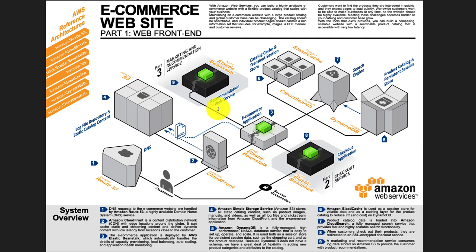This is an architecture taken from AWS's architectural center, and you can relate to an e-commerce platform that you already use — let's say Amazon or Flipkart in India. These are the fundamental components you would find in almost all e-commerce platforms. Let's go through them one at a time and understand the purpose of each component.